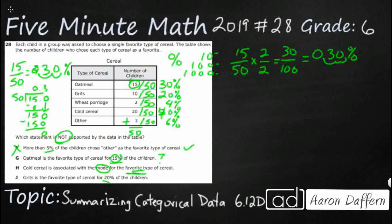And that is going to be 40. I knew something was looking wrong up there. So yes, cold cereal is going to be the mode. That is 40%. And then grits is the favorite type of cereal for 20%. That is correct. So our answer is G.